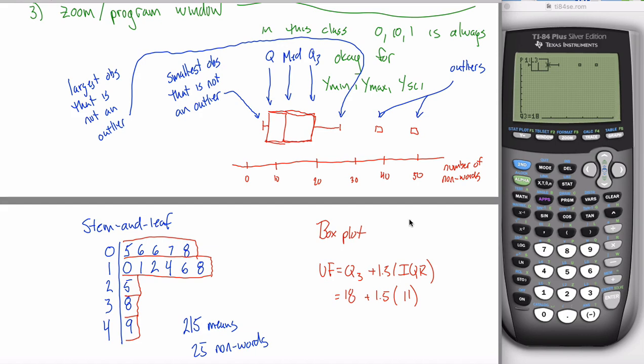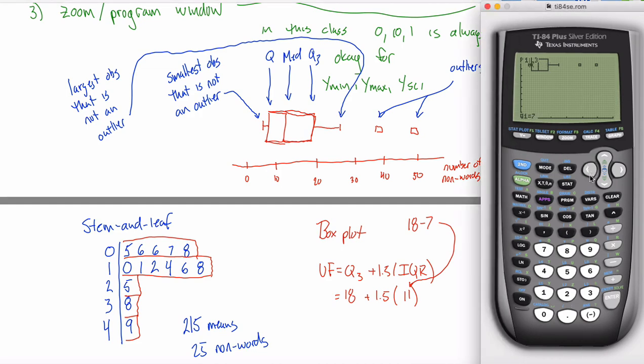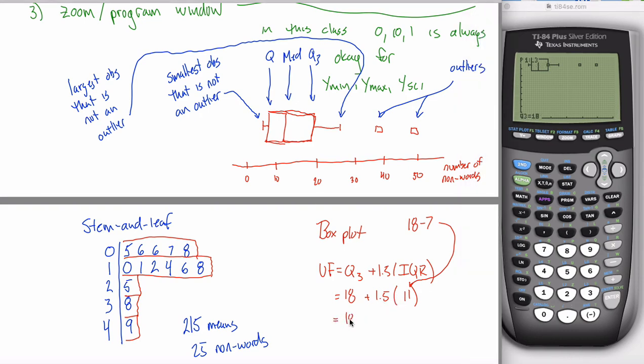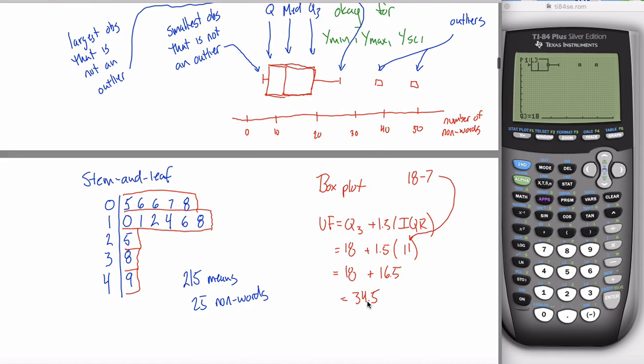So if I do this calculation, if I figure out what this is equal to, I think we can do it with the calculator, but I want to keep this up here for you. So I'm just going to do it in my head. I think this ends up being 18 plus 16 and a half. So I think you end up getting 34 and a half. This is your upper fence. This doesn't directly show up anywhere on your box plot.